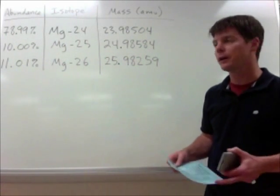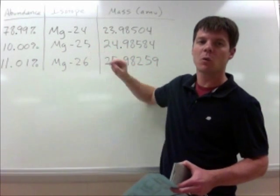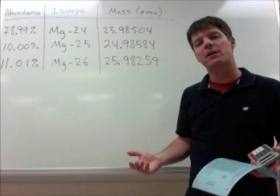There are actually three naturally occurring isotopes of magnesium. They are magnesium-24, magnesium-25, and magnesium-26. They are not found in equal abundance.